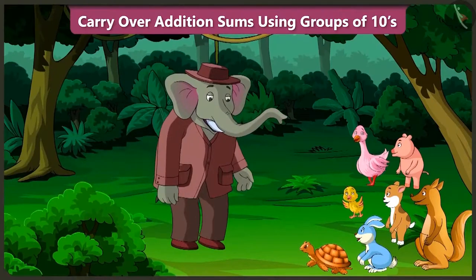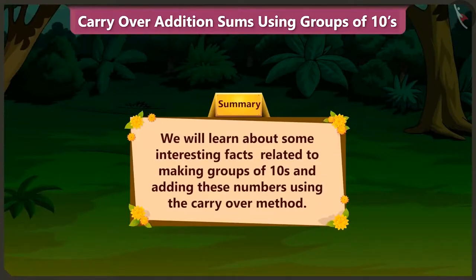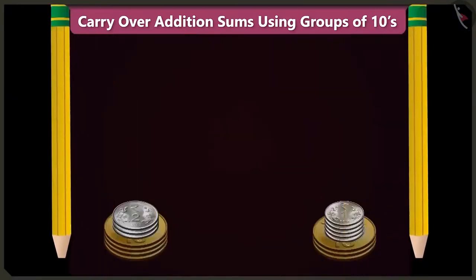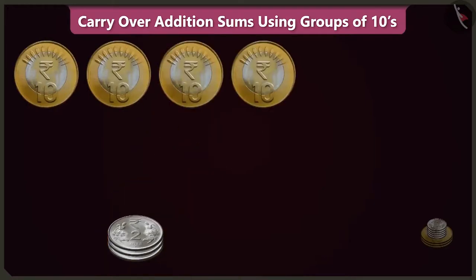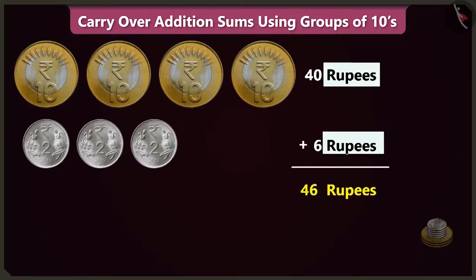Children, today in this video, through Chi-Chi and Choo-Choo's conversation, we will understand some interesting facts related to making groups of tens and adding these numbers using the carryover method. Hey, Chi-Chi. Help me count these coins. Yes. Sure, Choo-Choo. In this pile of coins, there are 1, 2, 3 and 4 coins of 10 rupees, which is 40 rupees. And 3 coins of 2 rupees, that is 6 rupees. So 40 and 6, there are 46 rupees.